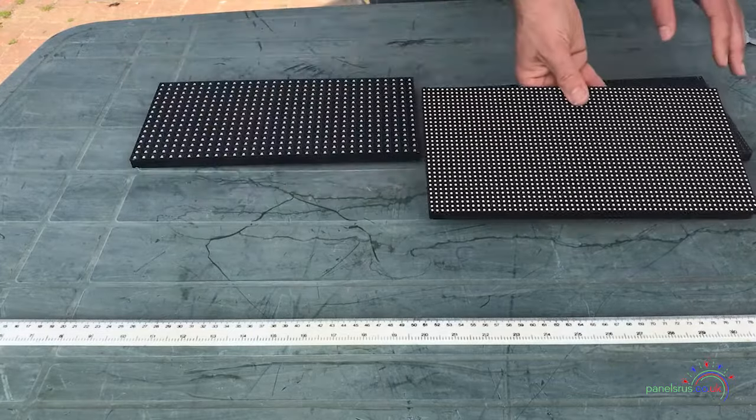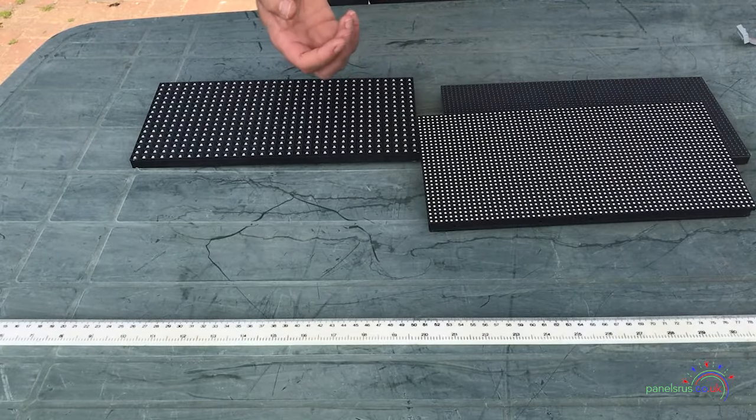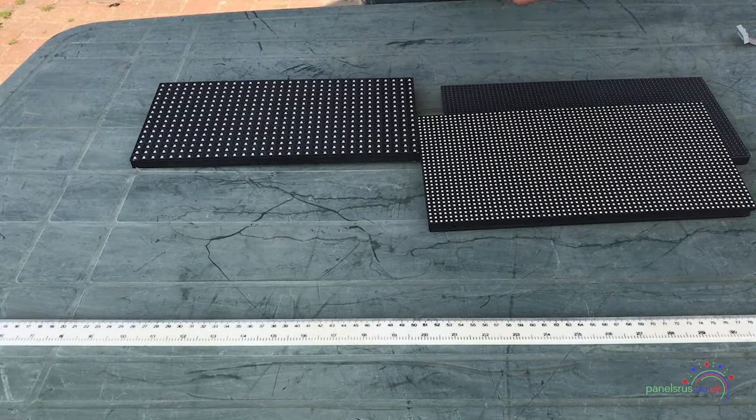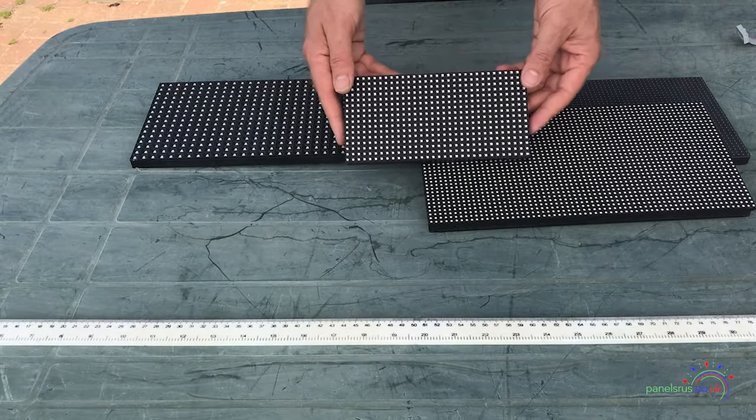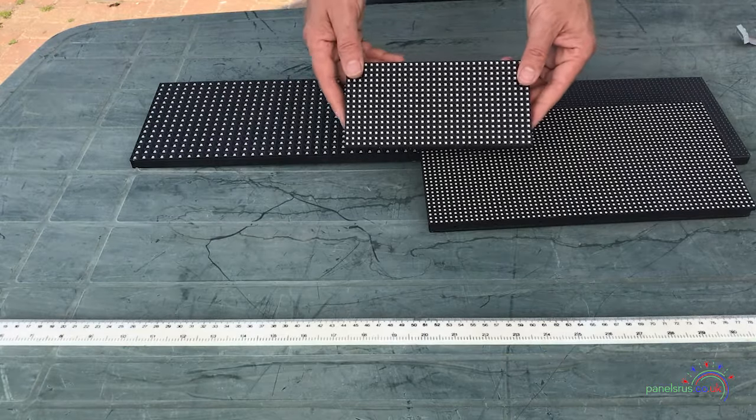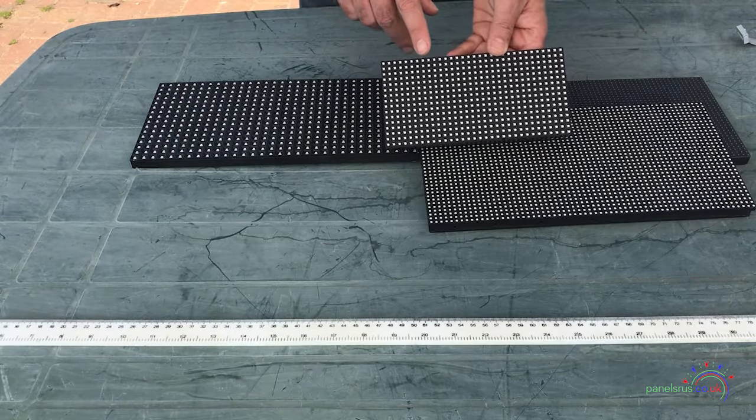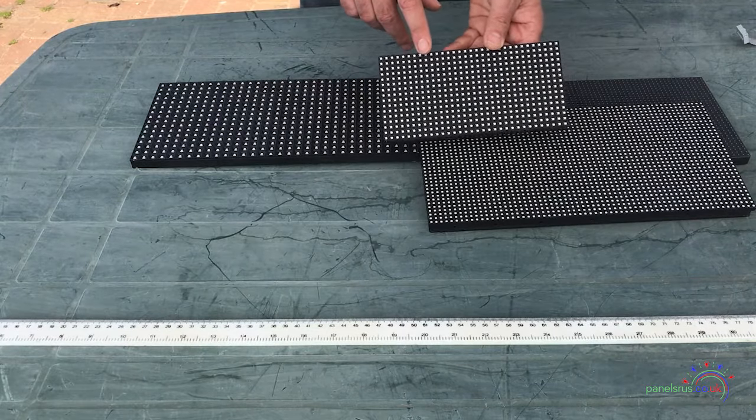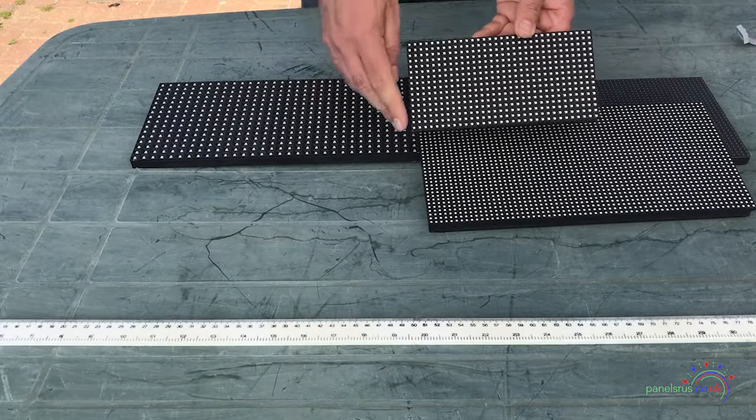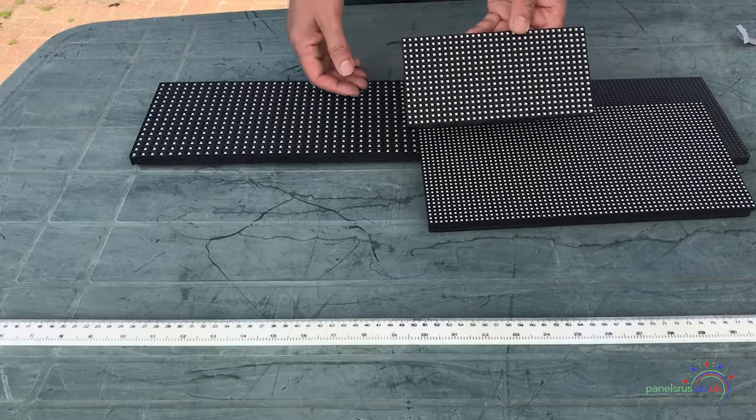Now as well as the standard types here, be aware that there are some oddball units around as well particularly places like eBay. So this one I purchased online and I thought I was getting a P10. I didn't actually read the description properly I just read 16 pixels by 32. I didn't realize it was a P6 panel until it turned up and I thought my goodness that box is small. I opened it up and there is a P6 exactly the same number of pixels as the P10 but just in a footprint two-thirds of the size.